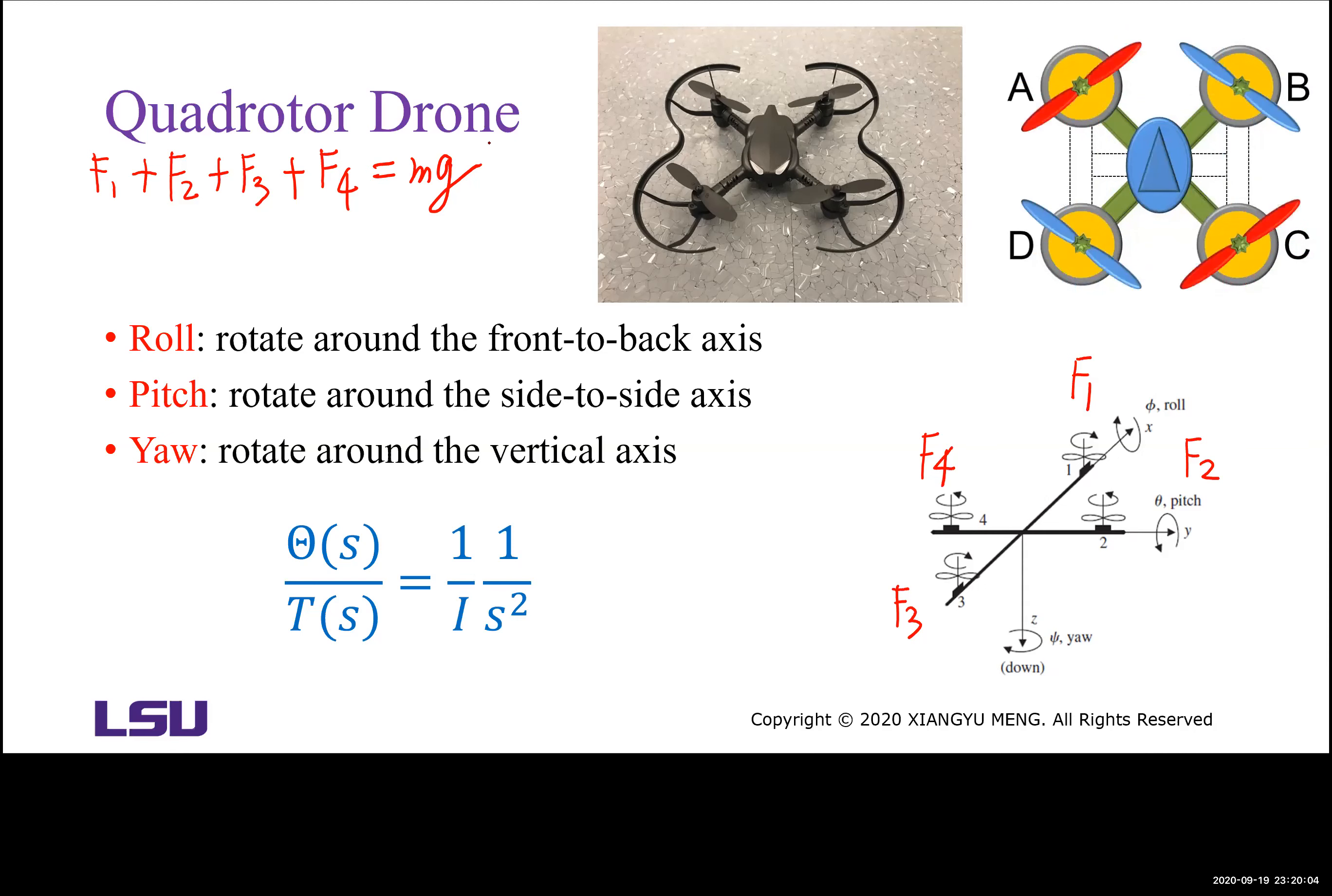We know Rotor 1 and Rotor 3 rotate in the clockwise direction. Rotor 2 and Rotor 4 rotate in the counterclockwise direction.